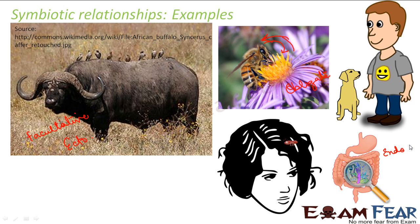So now you understand the different types of symbiotic relationships. In some, both will get benefited; in some, only one will get benefited. In some, they are completely dependent on each other for survival, while in others they are not. In some, one organism lives inside the body of another, while in others one organism lives on the body of the other.